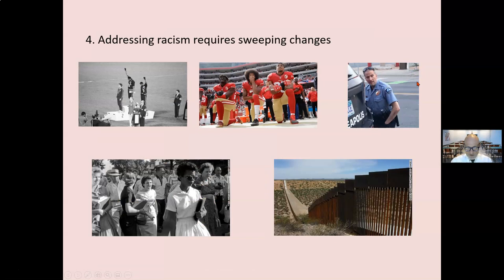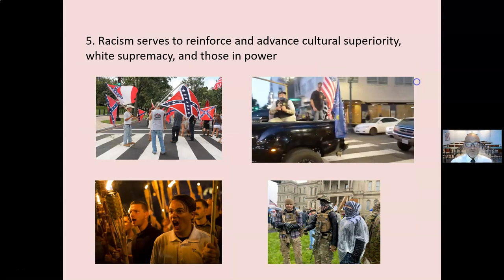For addressing racism, sweeping changes must be made — changes in our consciousness as well as our policies, our procedures, our laws, and regulations. Now, you may not see racism; you may not think you are racist. You may not see racism, but your brain does. This is what's called implicit bias. You may not see racism, but your policies, your laws, your guidelines, your traditions do. Your legal system does.